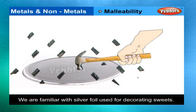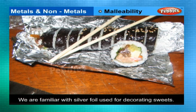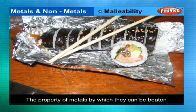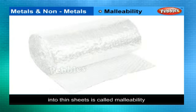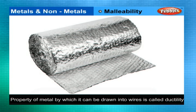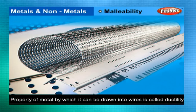You might be familiar with silver foil used for decorating sweets, and the aluminium foil used for wrapping food. The property of metals by which they can be beaten into thin sheets is called malleability. The property of a metal by which it can be drawn into wires is called ductility.